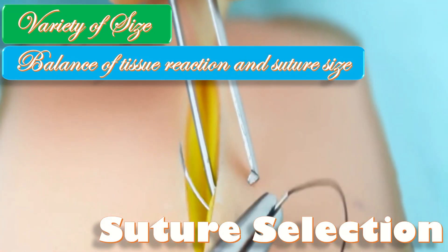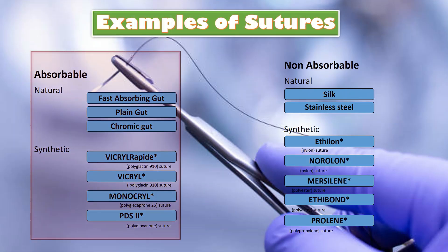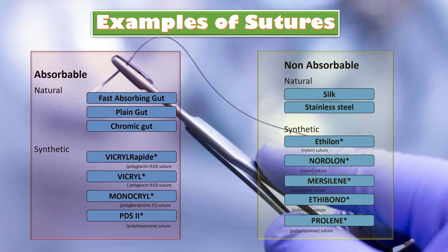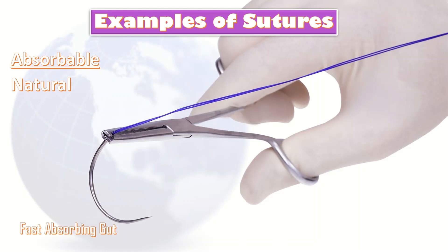Suture selection is based on a variety of factors including tissue reaction and suture size. Absorbable natural sutures include fast absorbing gut, plain gut, and chromic gut. Absorbable synthetic sutures include Vicryl Rapid, Vicryl, Monocryl, and PDS. Non-absorbable natural types include silk and stainless steel, and non-absorbable synthetic types include Ethilon, Nurolon, Mersilene, Ti-Cron, and Prolene.